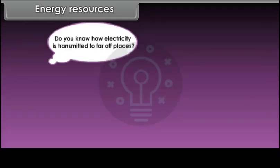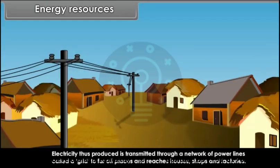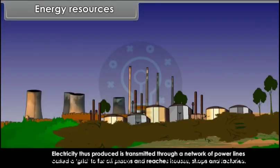Electricity thus produced is transmitted through a network of power lines called a grid to far off places and reaches houses, shops and factories.